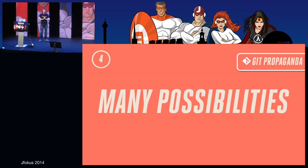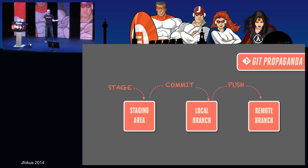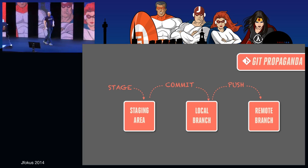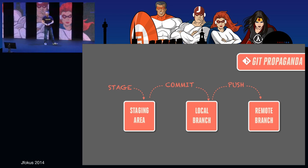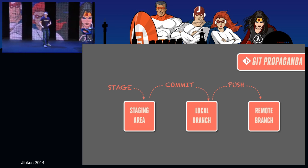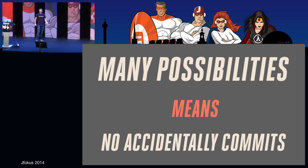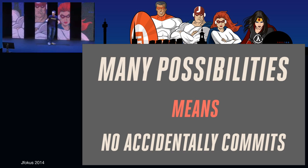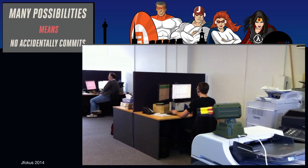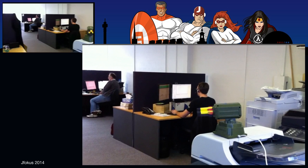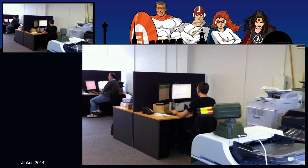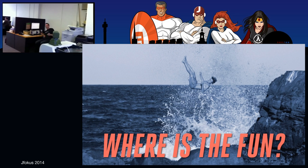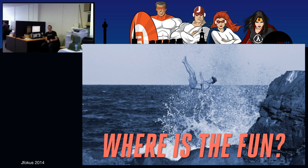Argument number four from the Git propaganda: you have so many possibilities with Git, you can't get anything wrong — you stage your changes, commit your changes, push to the remote branch, then merge back. With Subversion, there's just one thing: commit. All these many safeguards mean we don't do accidental commits anymore — no more committing half the files and breaking the build. At Atlassian we had a build server with a missile launcher that shot the guy who broke the build. Boom! We had fun! Git takes that away.